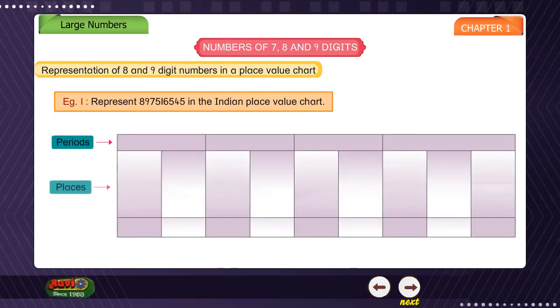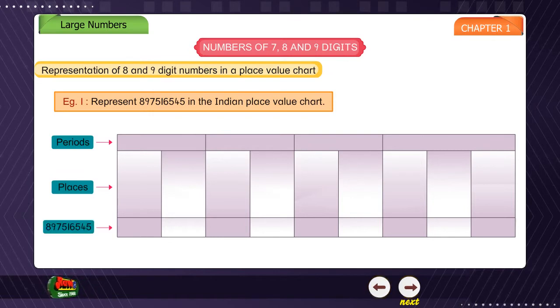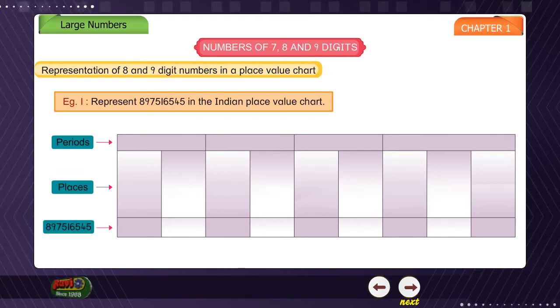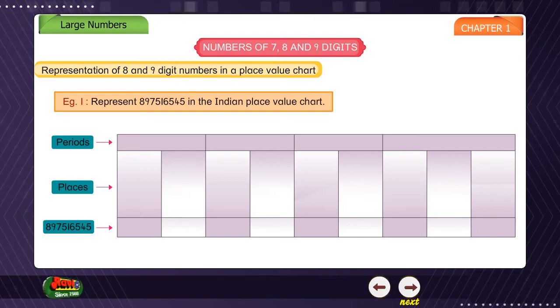Periods, Places. The digits are placed as: 8, 9, 7, 5, 1, 6, 5, 4, 5.